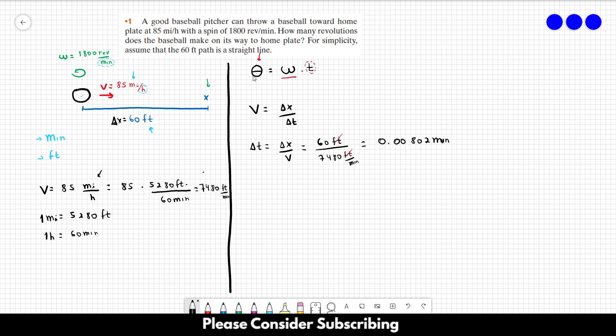So now we can just apply this equation over here. So actually, this is delta t. So delta t is going to be, not delta t, delta theta. So delta theta is equal to the angular velocity which is equal to 1800 revolutions per minute. And we have 0.00802 minutes.